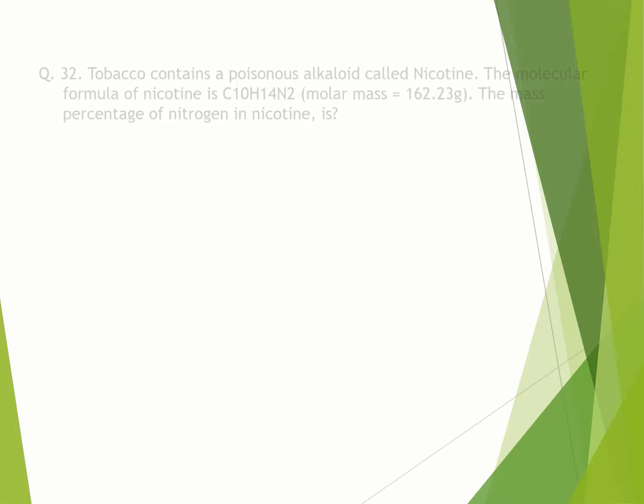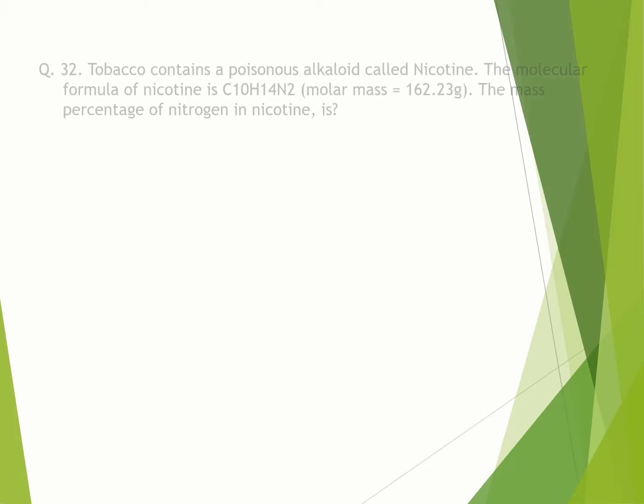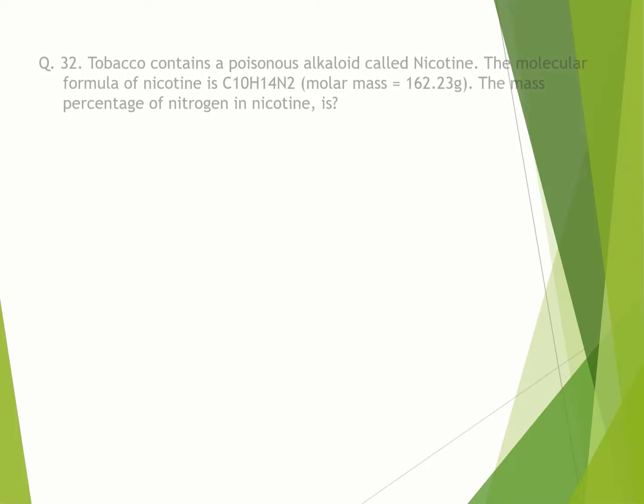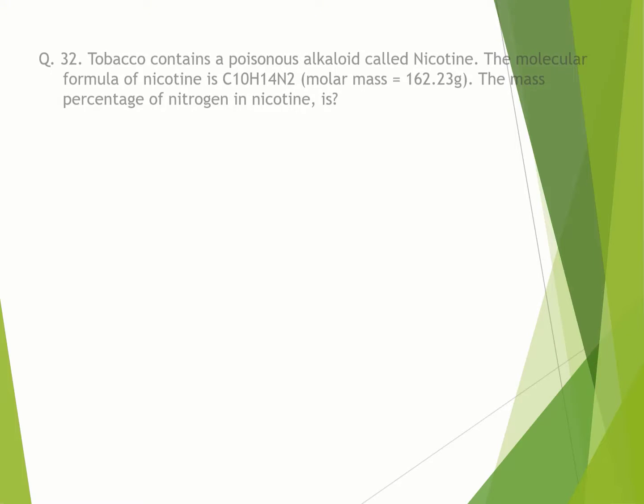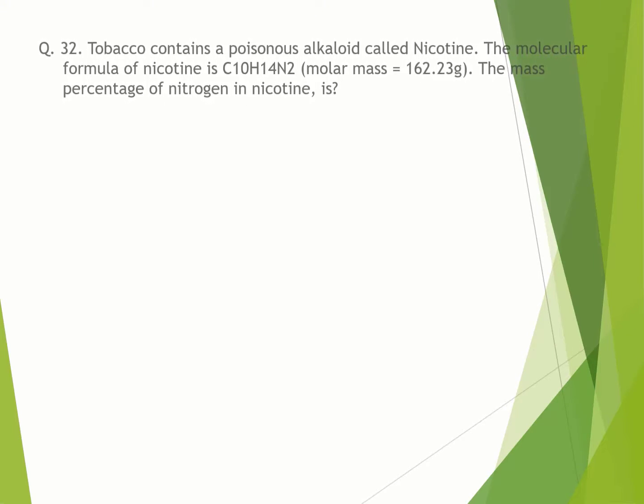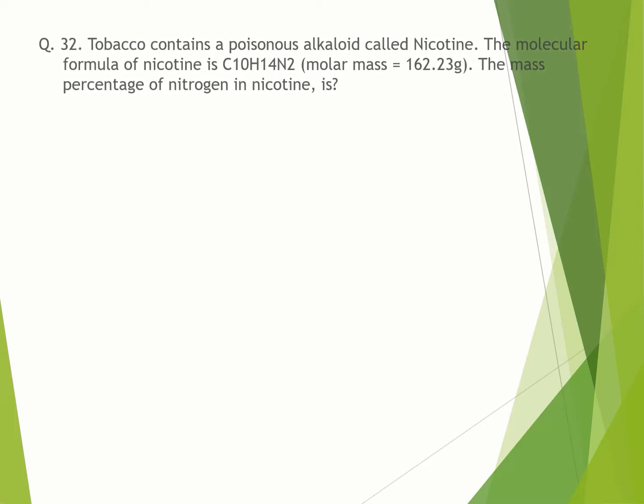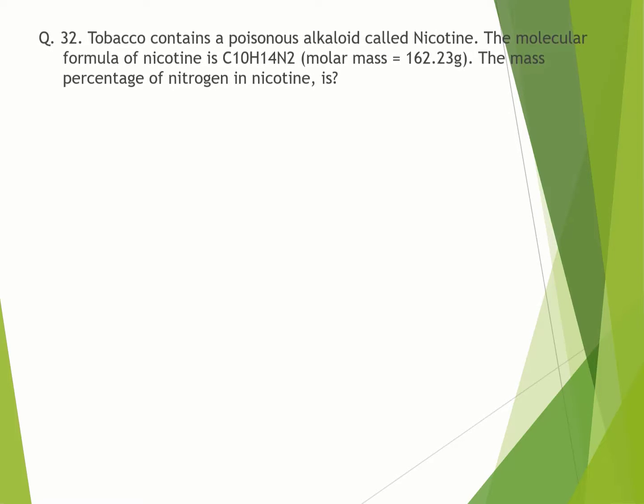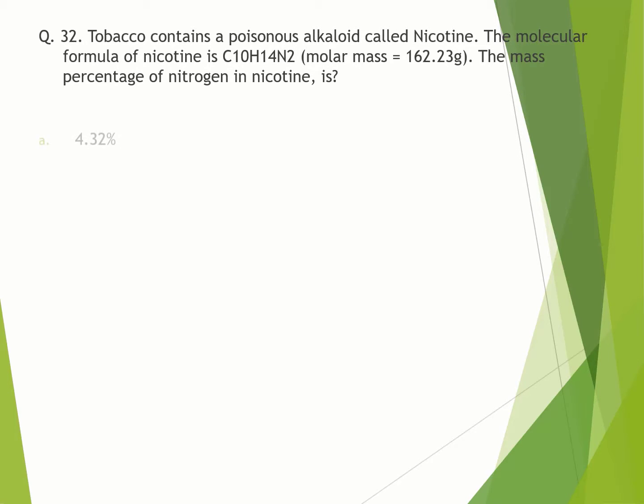Question number 32. Tobacco contains a poisonous alkaloid called nicotine. The molecular formula of nicotine is C10H14N2, molar mass equals 162.23 grams. The mass percentage of nitrogen in nicotine is: A. 4.32%. B. 8.23%. C. 12.4%. D. 17.3%. Correct option is D.